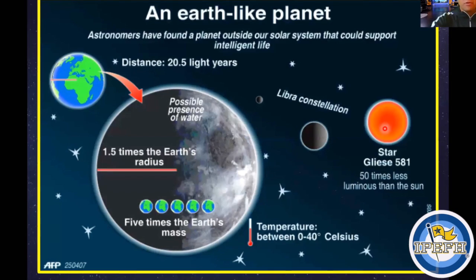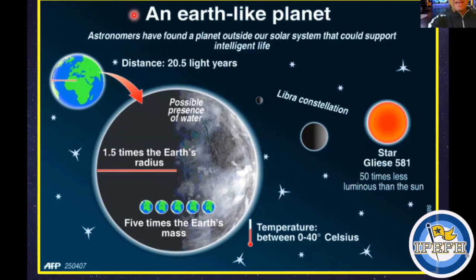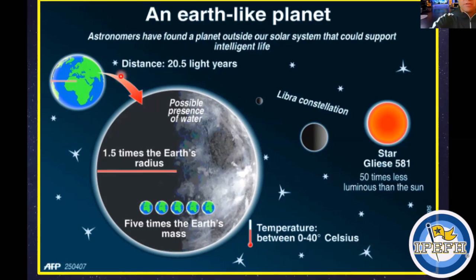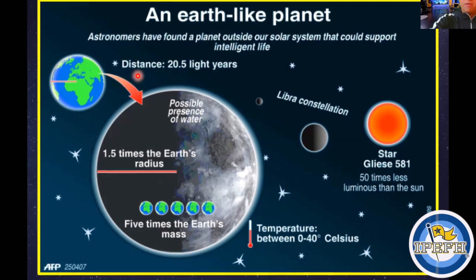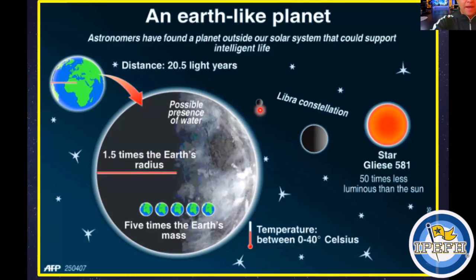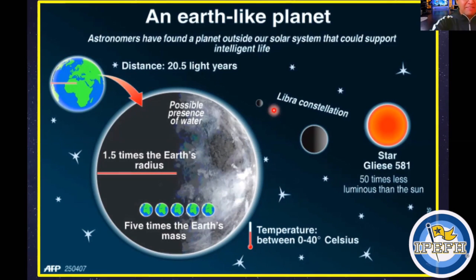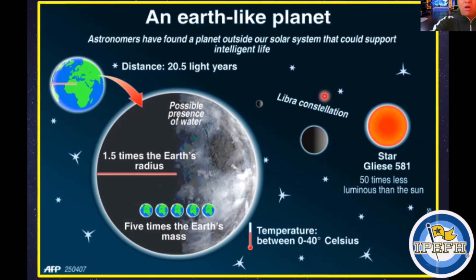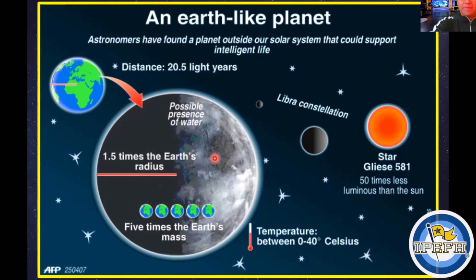Here we have information about how an Earth-like planet looks. We have relevant information such as the distance, the possible presence of water, the size of the planet, and also the weight of the planet. We have information about the location of this planet. In this case, this hypothetical planet is in the Ibra constellation. Also, we have comparisons of this planet with respect to a star.